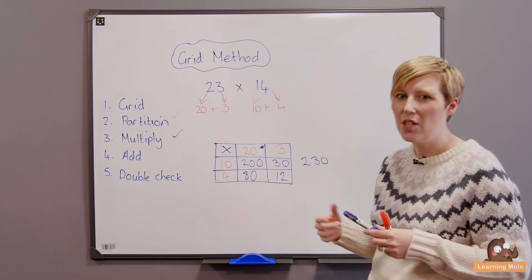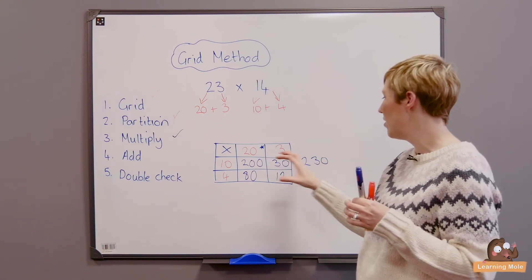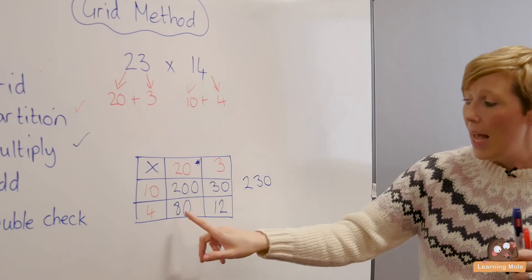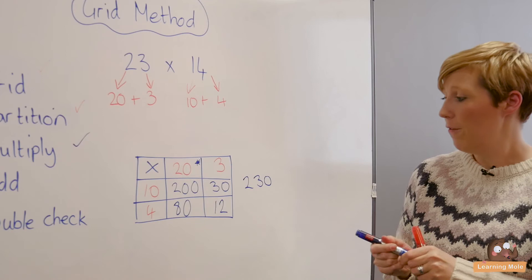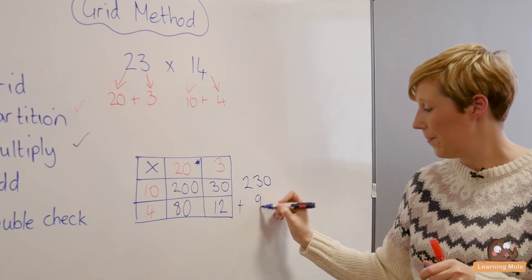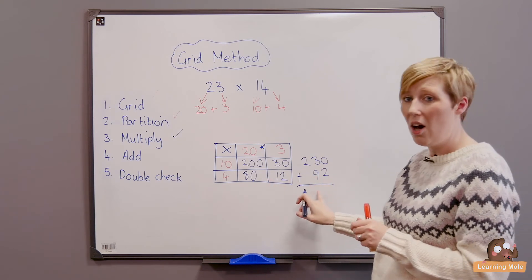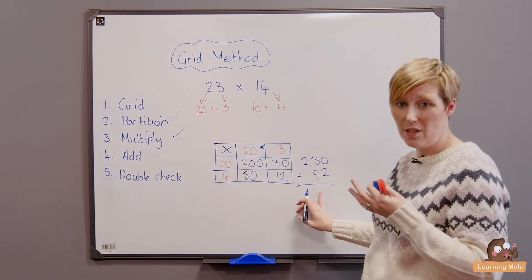If they can't, that's not a problem at all. Then I would do my 80 plus 12, which I know is 92. And as you can clearly see, it comes out really nicely into a nice column addition for you, and you're practicing that other method too, which is great.